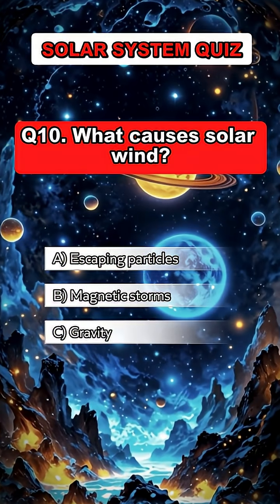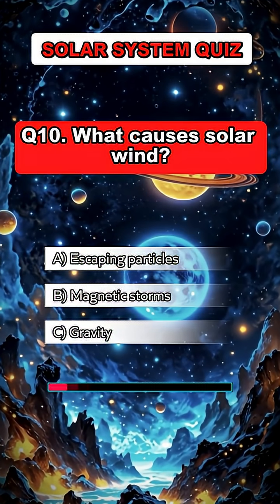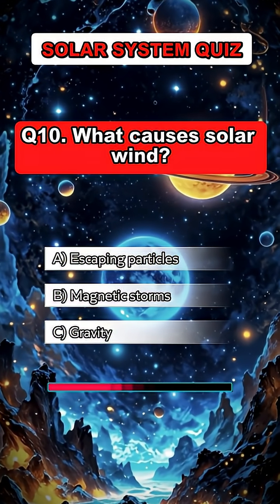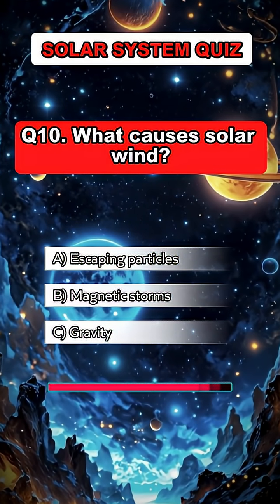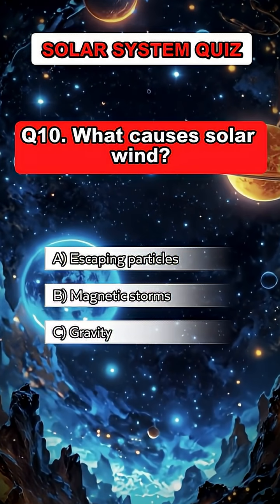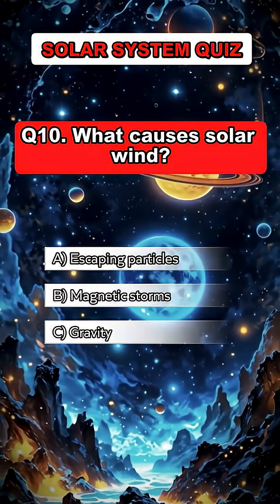Question 10. What causes solar wind? Answer A. Escaping particles.